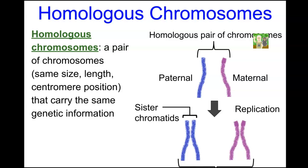Homologous chromosomes, also known as homologues, are a pair of chromosomes of the same size, length, and shape — where shape refers to the centromere position. The centromere is where two sister chromatids attach to each other in a replicated chromosome. Each homologous pair has two sister chromatids for the paternal and two for the maternal chromosome.